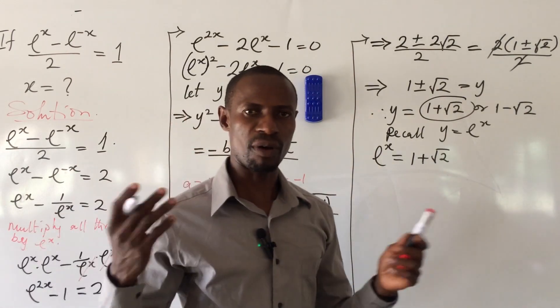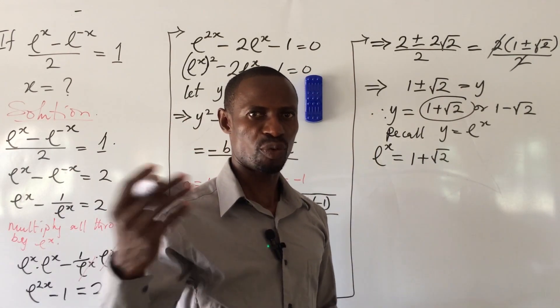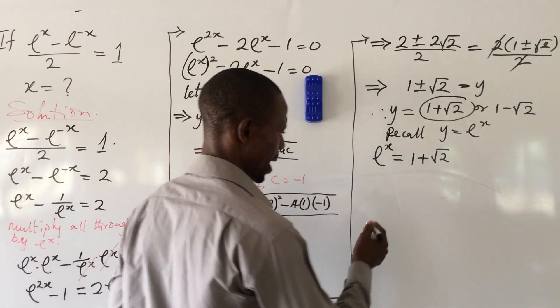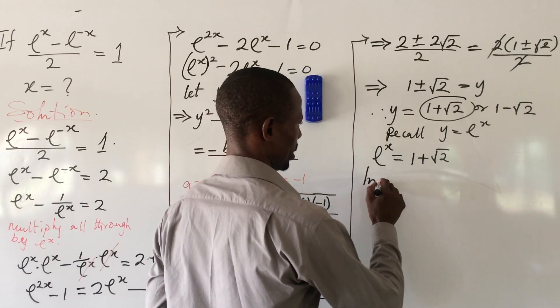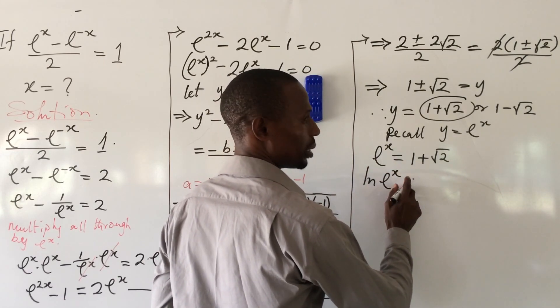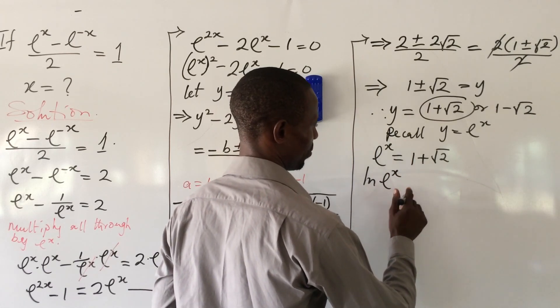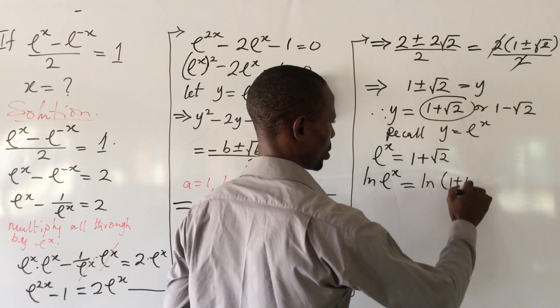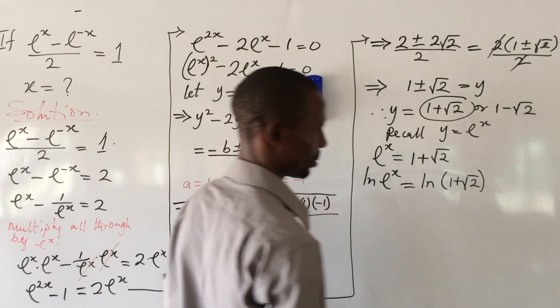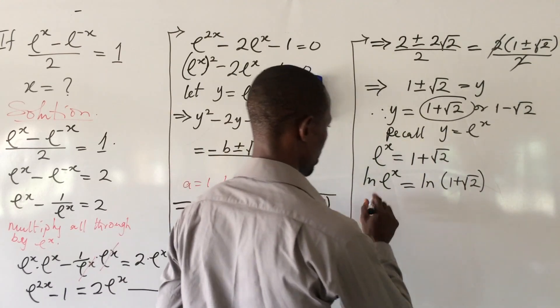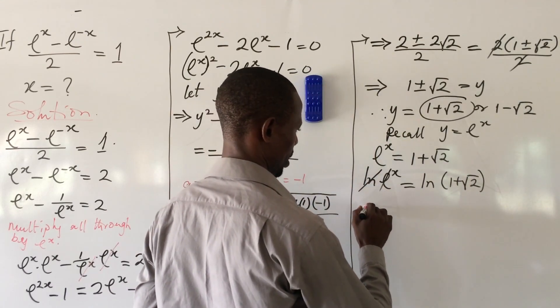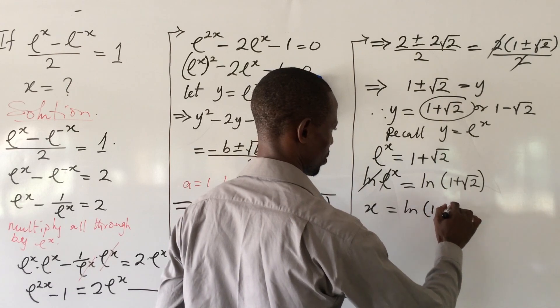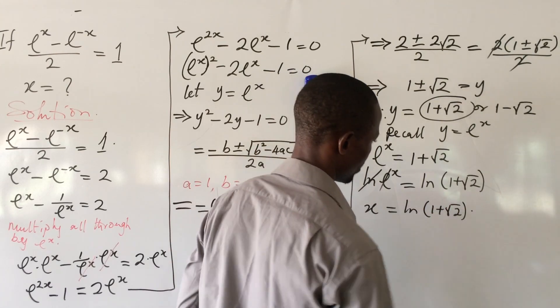How do we eliminate the e? We introduce a natural log called ln. If we do that, this gives us ln(e^x) = ln(1 + √2). We take care of this, and we're left with x = ln(1 + √2).